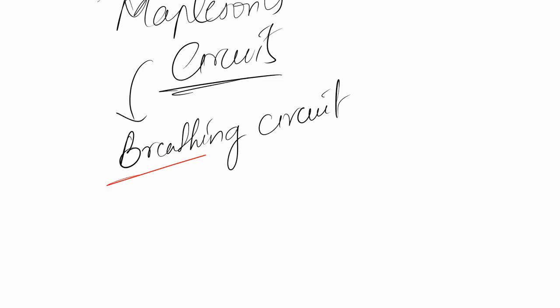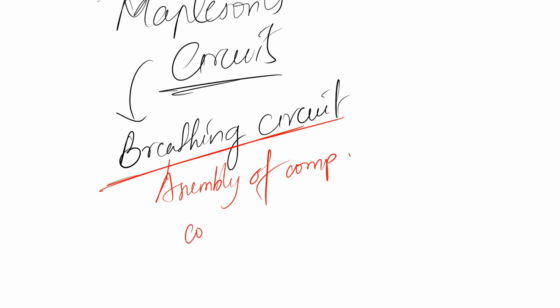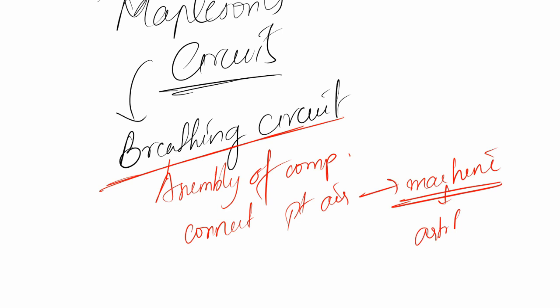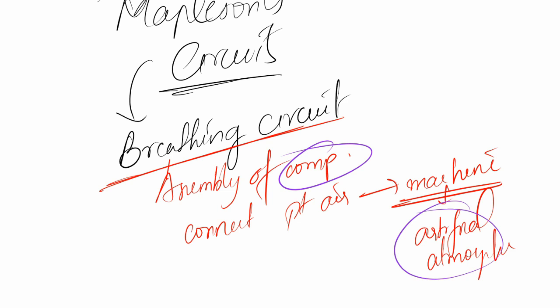A breathing circuit is defined as an assembly of components which connect the patient's airway to a machine — preferably an anesthetic machine — which is maintaining an artificial atmosphere. So two important things to note here: a breathing circuit has a specific set of components, and it has an artificial atmosphere, meaning we will be controlling the type of air going into the person's airway.